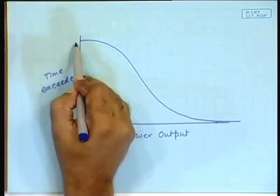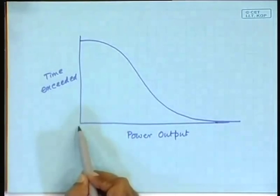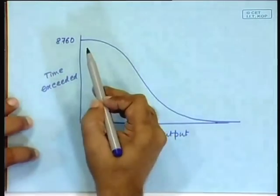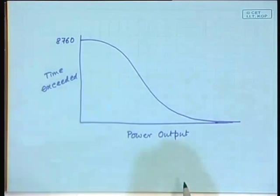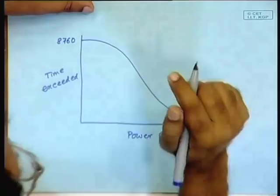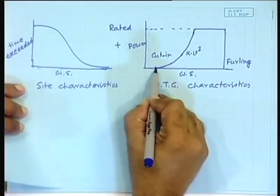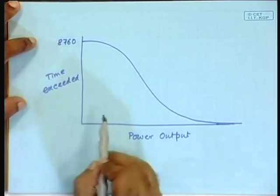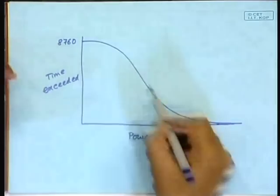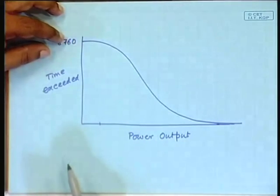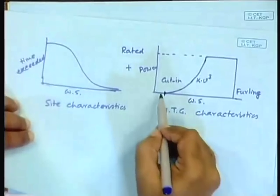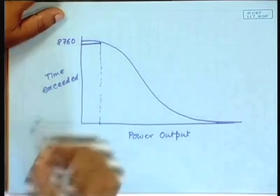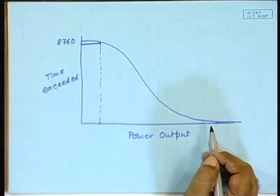This point represents the total number of hours in a year, since zero power is exceeded for 8760 hours. Out of this whole time, power generation is really zero below the cut-in wind speed. So some part will be chopped off — you will not get power output there, corresponding to a low value of power. When cubed, a small velocity gives a particular point, and below that you are generating nothing. So this part gets chopped off — you are not generating in this region.